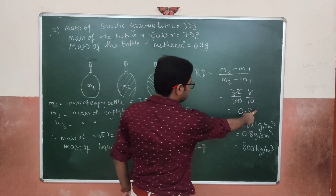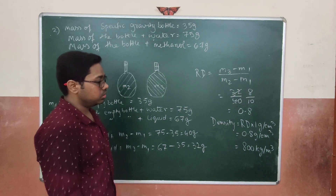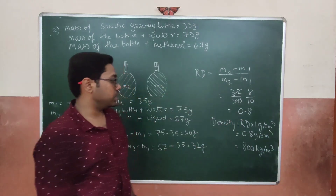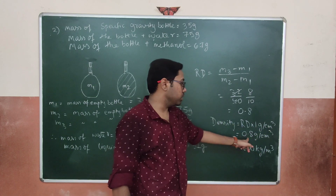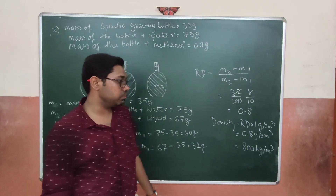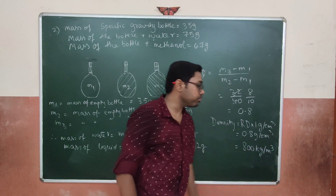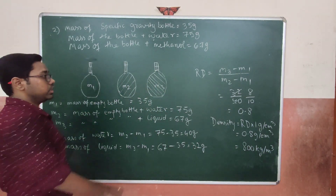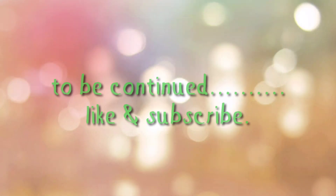Relative density has no unit because it is a ratio. The relative density of the liquid is 0.8. To find the actual density, multiply relative density by 1 g/cm³: 0.8 × 1 = 0.8 g/cm³. Converting to SI units: 0.8 × 1000 = 800 kg per meter cube. This sum and the relative density formula for liquids are very important.